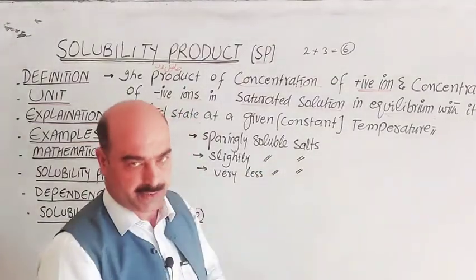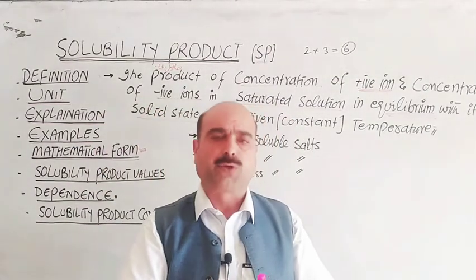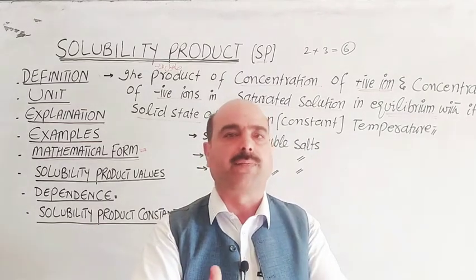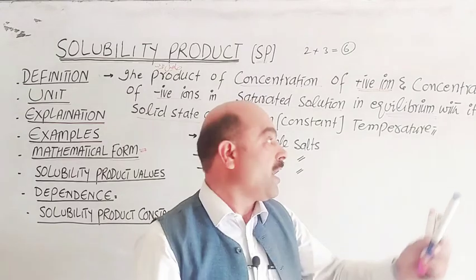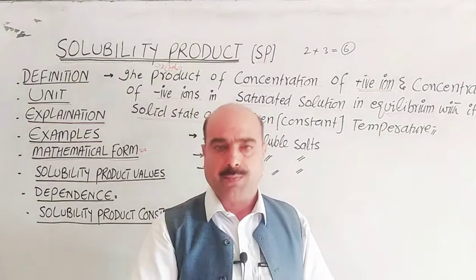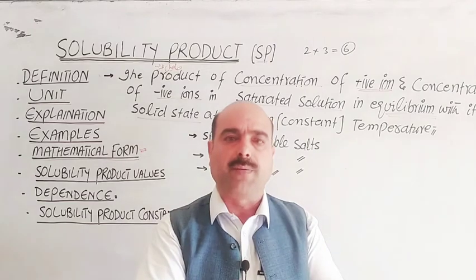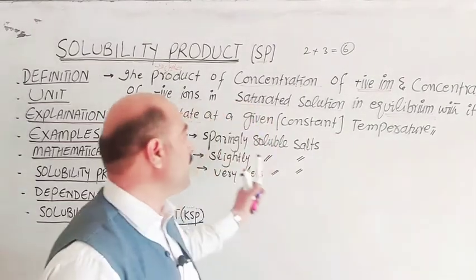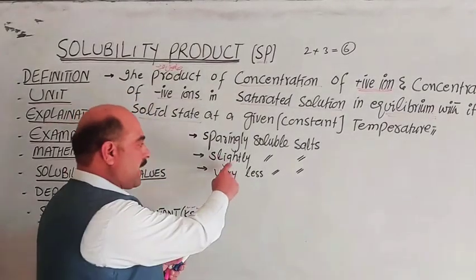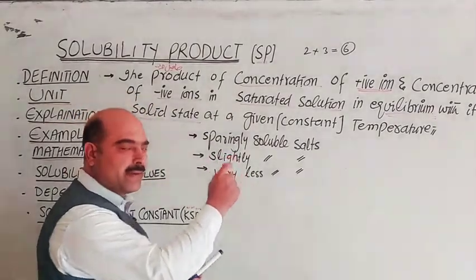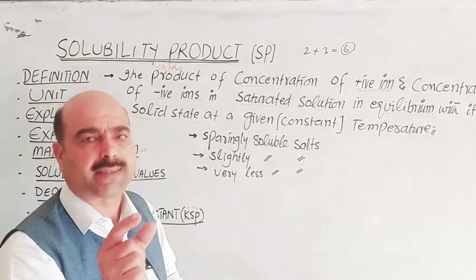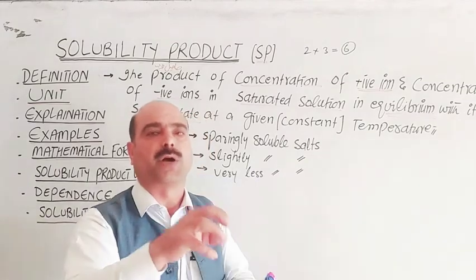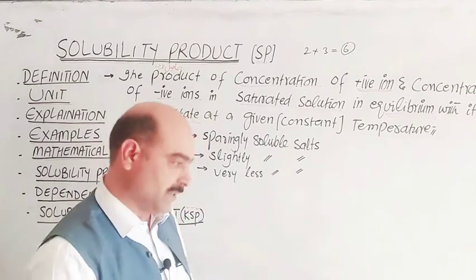Sparingly soluble salts ionize very little in solution. If a salt ionizes completely, it is a strong electrolyte — it has no solid state remaining, so no equilibrium exists and no reversibility is created, meaning no equilibrium constant can be established. But when a salt is sparingly soluble — slightly or very little soluble — it ionizes only a little in solution, and the remaining solid state maintains an equilibrium.